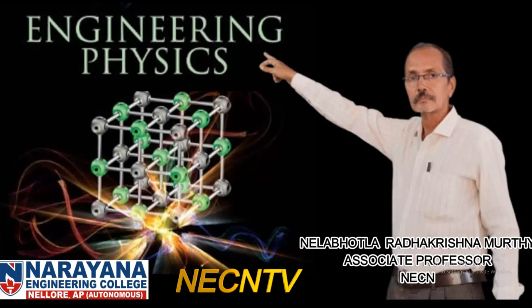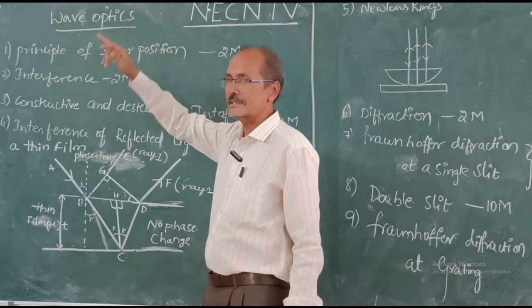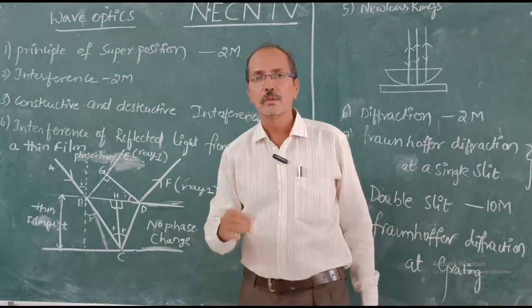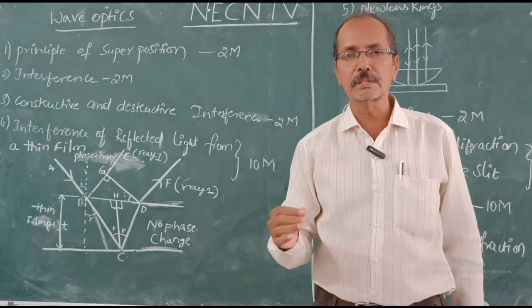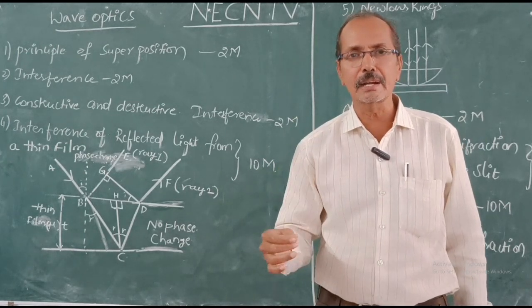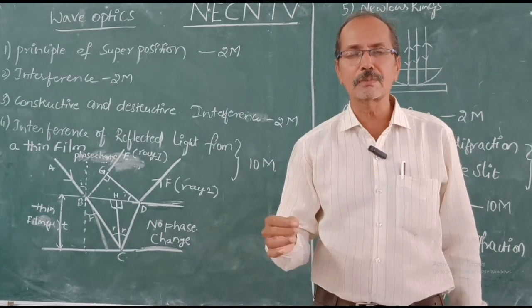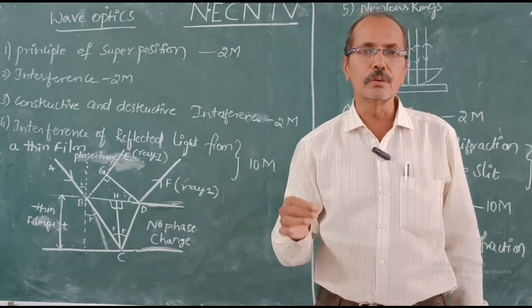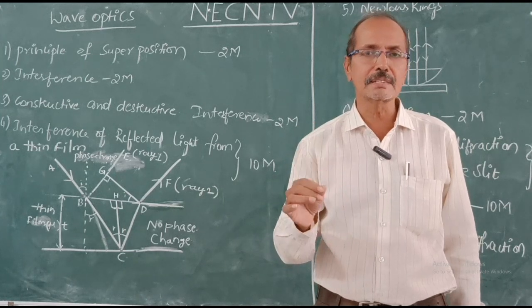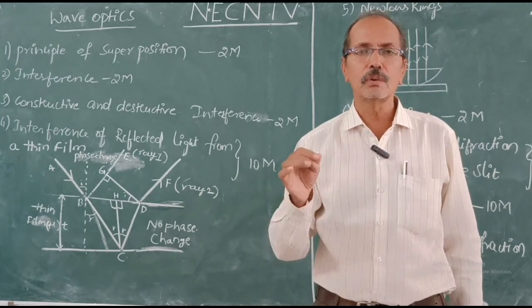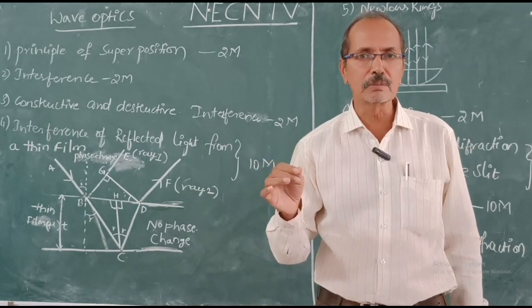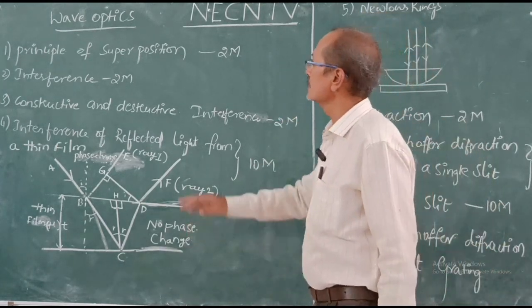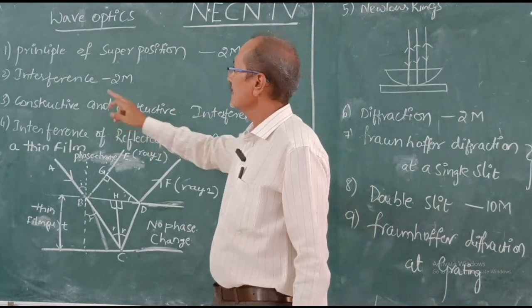The mid-one examination syllabus contains the first two units. The first unit is wave optics. In wave optics, the basic principle is the principle of superposition. When two or more waves traveling in a medium in the same direction are superimposed together, the resultant displacement at any point in the medium is equal to the algebraic sum of the displacements due to individual waves — that is, Y = Y1 + Y2, where Y1 and Y2 are displacements of individual waves and Y is the displacement of the resultant wave. This question is important for two marks.